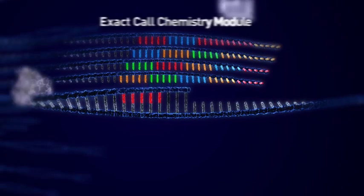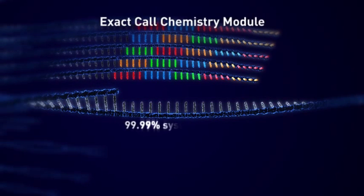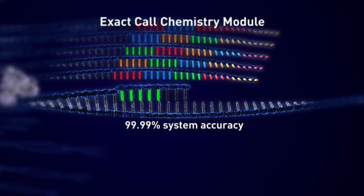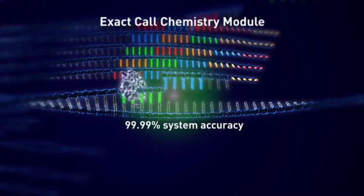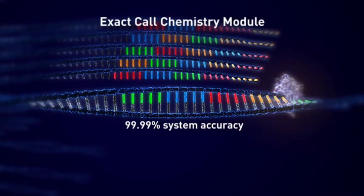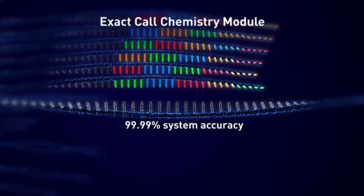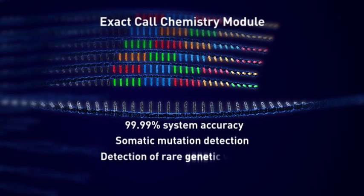Using the Exact Call Chemistry Module, 99.99% system accuracy is achieved by sequencing with an additional primer using a multi-base encoding scheme. This level of accuracy allows detection of somatic mutations and rare genetic variants.